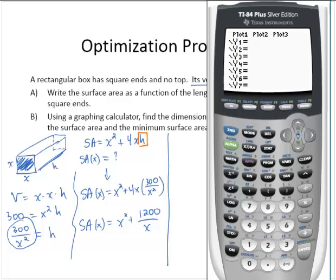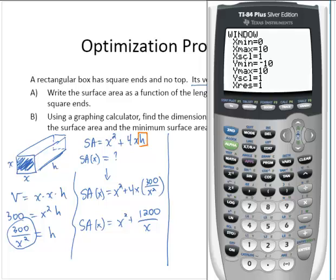So on my calculator, y equals screen, x squared plus 1,200 divided by x. Now, as for the window, x is the length of one of the square ends of the box. So its minimum value is 0. For a maximum value, I'm just going to guess here. Let's say 20. Scale isn't too important. Our y variable here is the surface area. So the surface area is x squared plus 1,200 over x. It's going to be a reasonably large number. Its minimum value is 0. And just for a maximum, I'm going to start with 100 and see if I need to adjust things from there. I'll use a scale of 10.